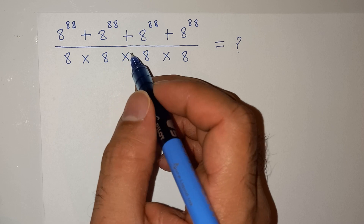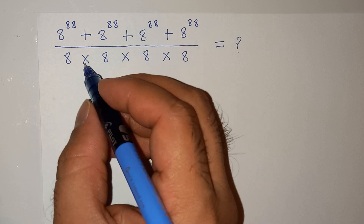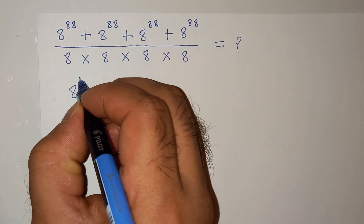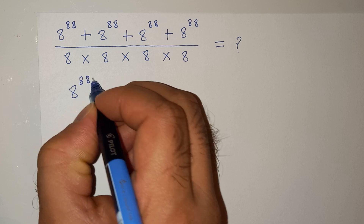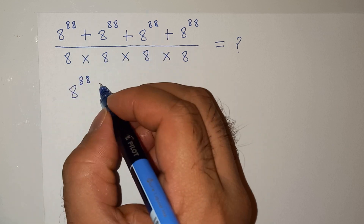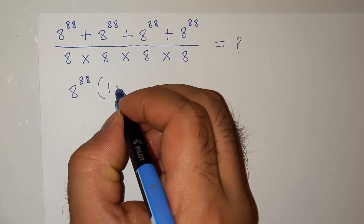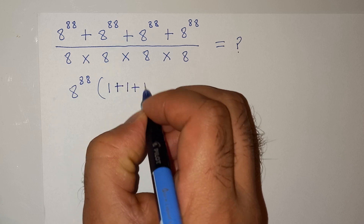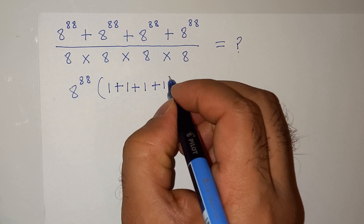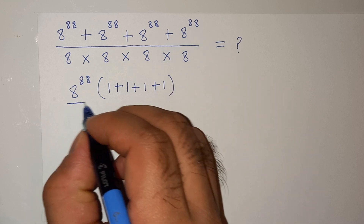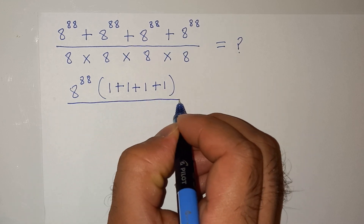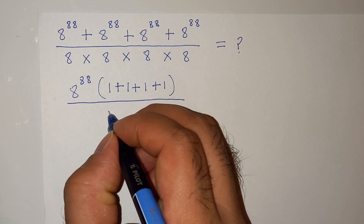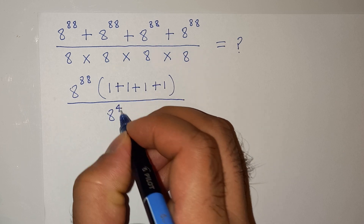How to solve this question? We can write the numerator with 8 power 88 as common, so we can take it out. Then we will have 1 plus 1 plus 1 plus 1 — that is 4 times — in the numerator. In the denominator, 8 is multiplied 4 times, so we can write this as 8 power 4.